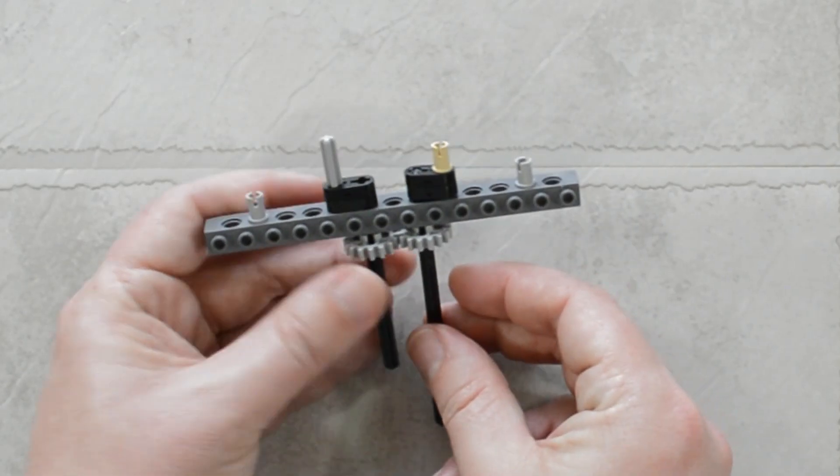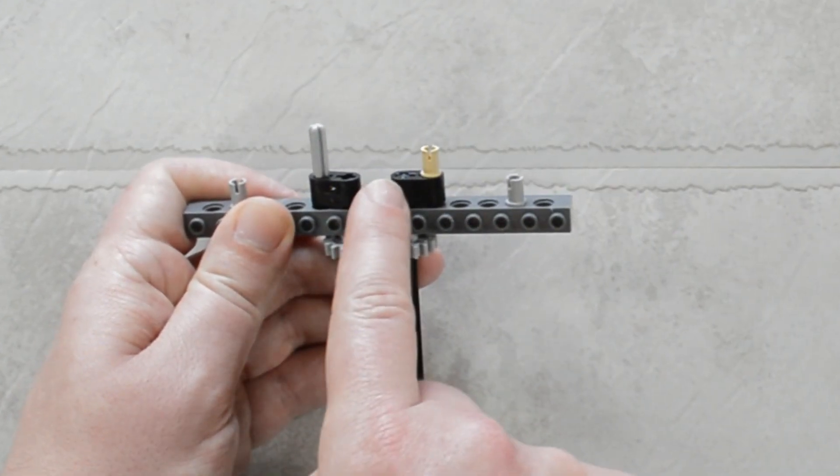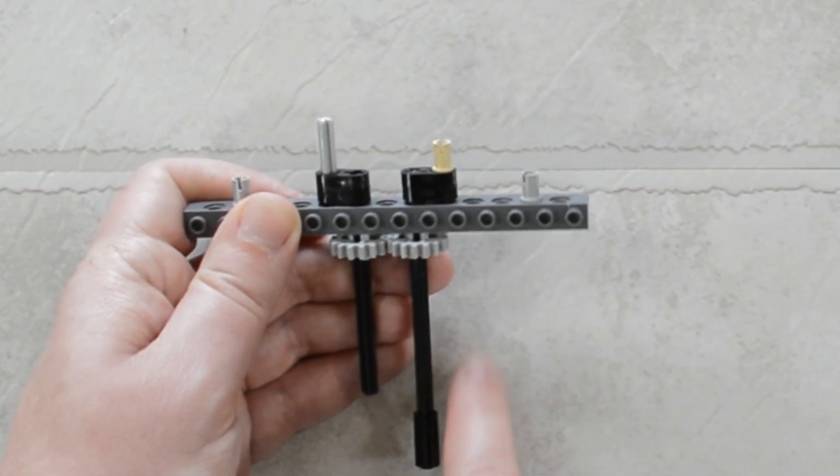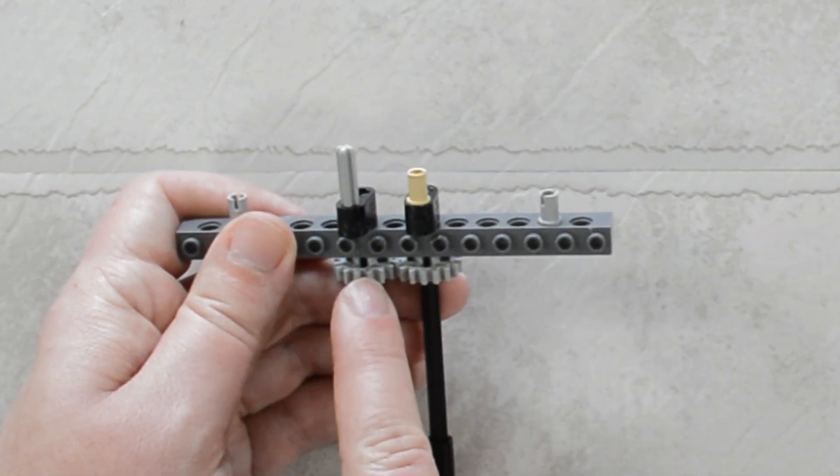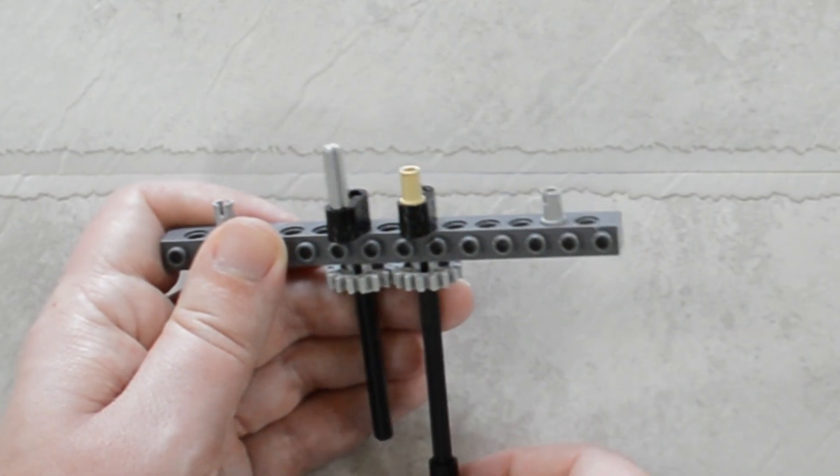So the only really complicated part is these cams. They're just offset from the main axle. So as we turn one gear, the other gear turns, bringing those two end sections together.